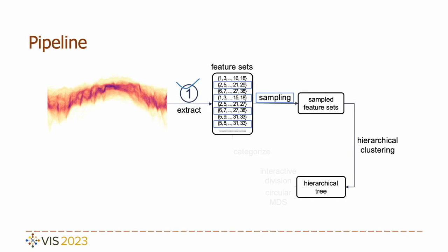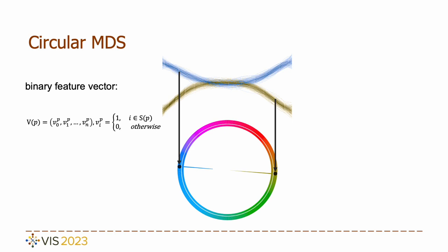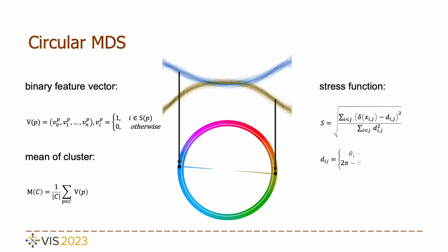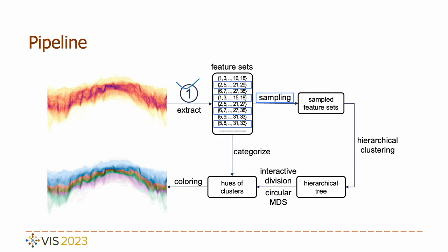After constructing the hierarchical clustering tree, users can set cluster numbers or divide existing clusters. We determine the closest cluster for unsimplified bins and employ circular multidimensional scaling for cluster color assignments. Our aim is to assign a hue value to each cluster, effectively mapping inter-cluster relationships to the hue space. We calculate the mean for each cluster using one-hot encoding to create feature vectors for bins, where 1 signifies the presence of a line and 0 denotes absence. To map these means onto the hue space, we employ circular multidimensional scaling, optimizing angles through gradient descent to determine each cluster's hue value. Once we have the assigned hue for each cluster, we use these hues to create single-hue color maps, which we then apply to color the clusters in our colored line-based density plot.